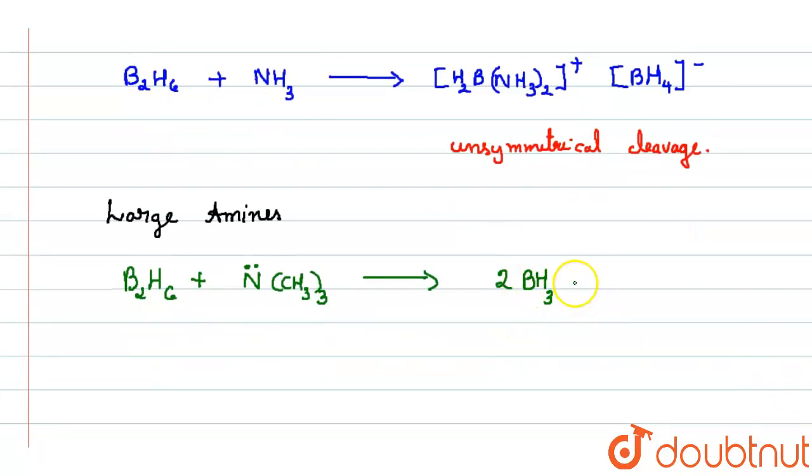So since it is a Lewis acid, it has to get an electron from a Lewis base that is nitrogen whose lone pairs are given and CH3 is an electron donating group which has a plus I effect. So in this case, if you see, it has got symmetrical cleavage.